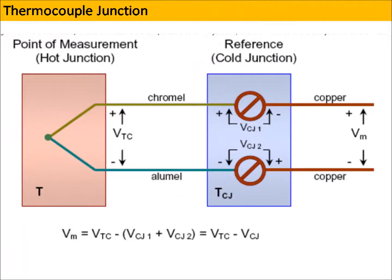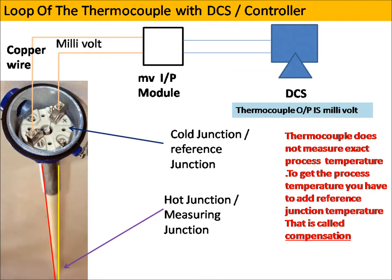This is how a thermocouple junction looks like. This picture shows you the loop — how a thermocouple is connected to a DCS or a controller.